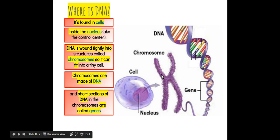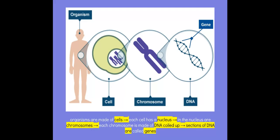Short sections of DNA in the chromosomes are called genes. So the hierarchy goes: cell, nucleus, chromosome, DNA. A chromosome is made of DNA that's wrapped up, and each section of DNA is known as a gene. It's really important to remember that hierarchy.